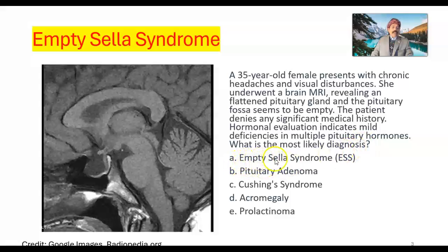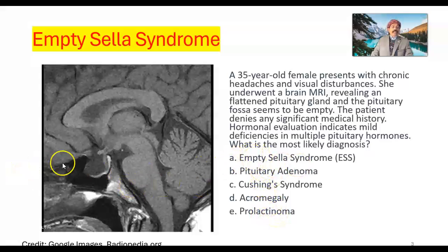The choices are: Empty Sella Syndrome, pituitary adenoma, Cushing syndrome, acromegaly, and prolactinoma. The answer is Empty Sella Syndrome, and this is the empty sella turcica.